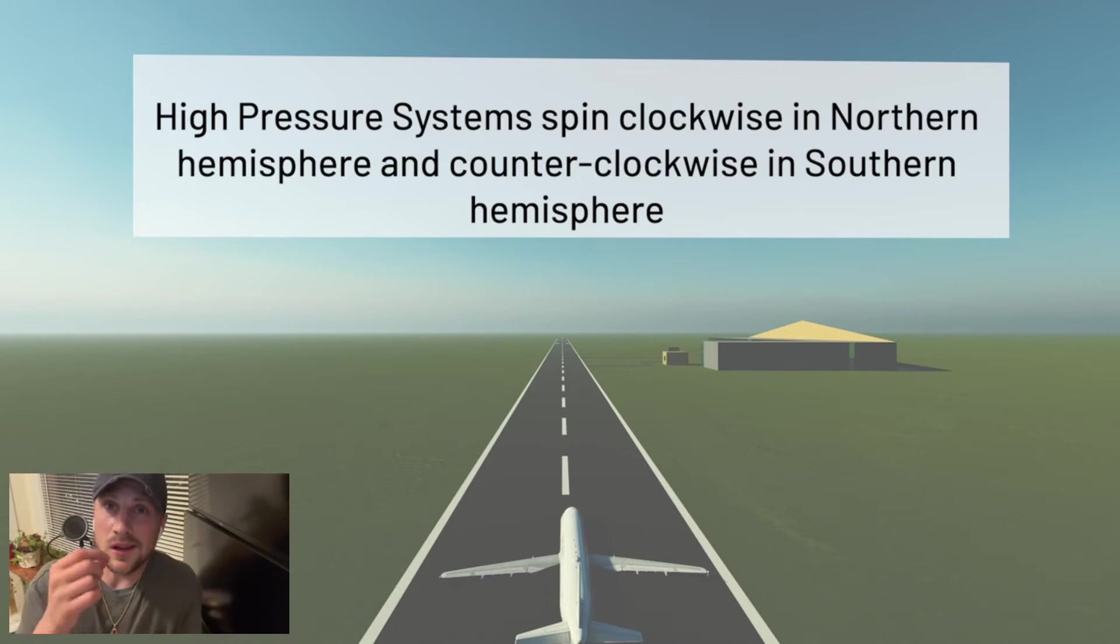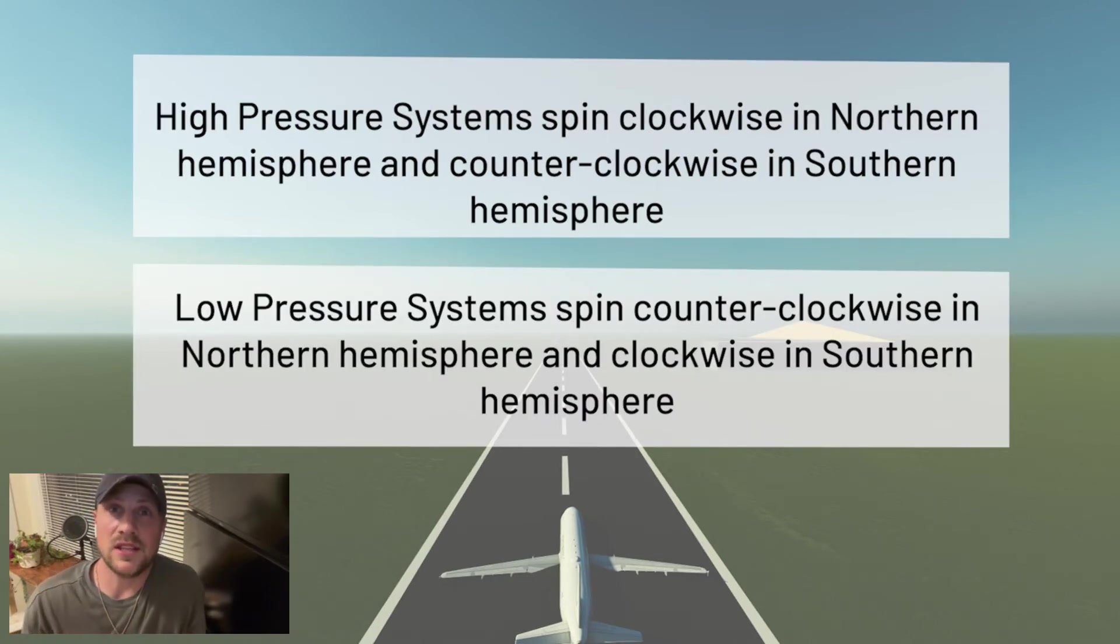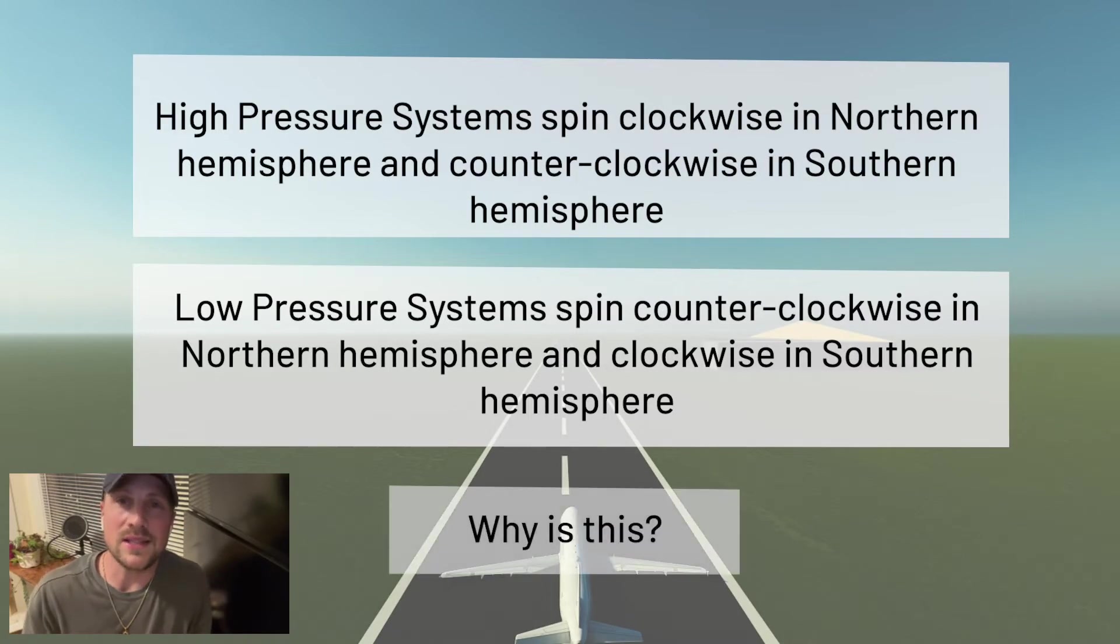High pressure systems spin clockwise in the northern hemisphere and counterclockwise in the southern hemisphere. Low pressure systems, on the other hand, spin counterclockwise in the northern hemisphere. So they are the opposite of high pressure systems. And then in the southern hemisphere, that switches. Why is this?